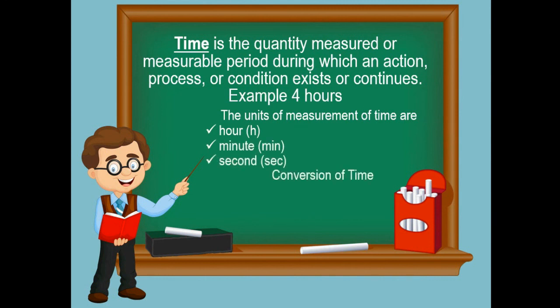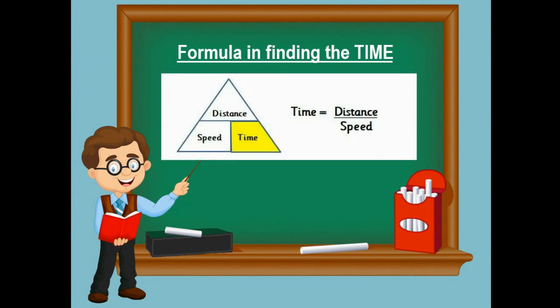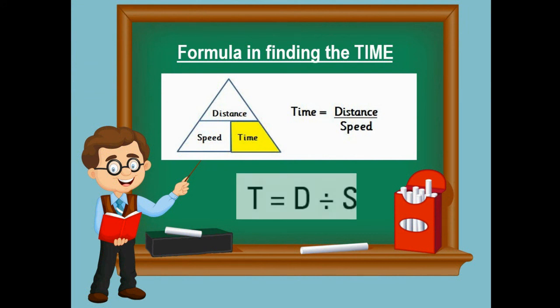The units of measurement of time are hour, minute, and second. In the conversion of time: one hour is equivalent to 60 minutes, one minute is equivalent to 60 seconds. The formula for finding time using the triangle is: time is equal to distance divided by speed, or T equals D divided by S.